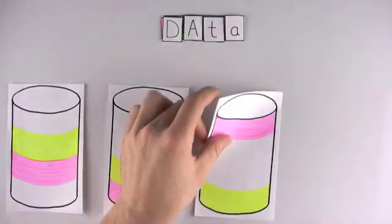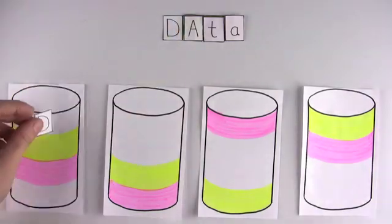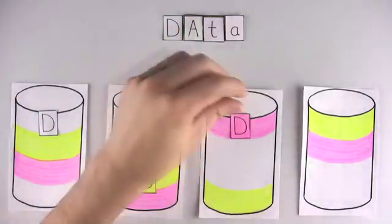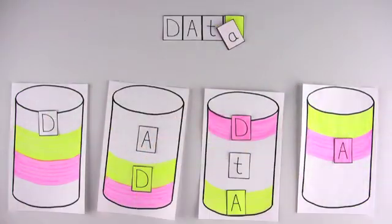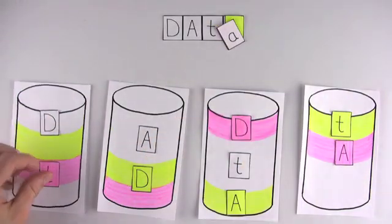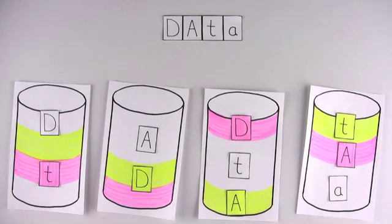RAID Level 6 is similar to Level 5, but uses not one, but two sets of parity so that data can be recovered even if two drives are lost. Calculating all this parity takes time, and RAID Levels 5 and 6 aren't always as fast as Levels 1 and 0.